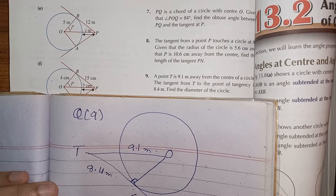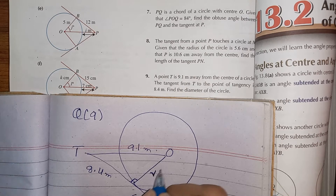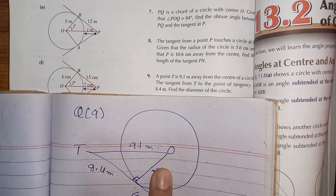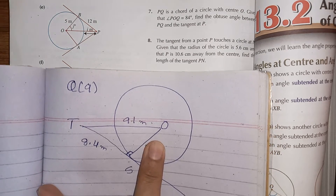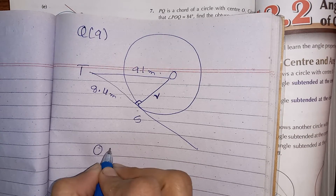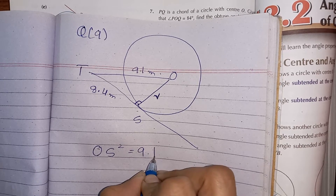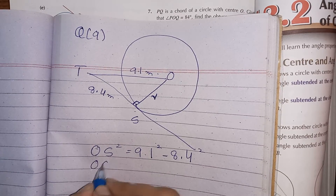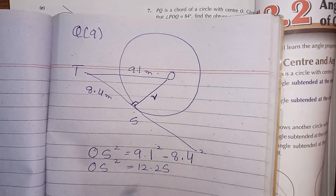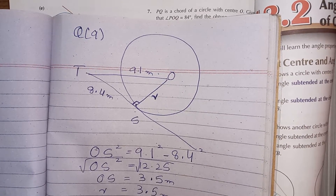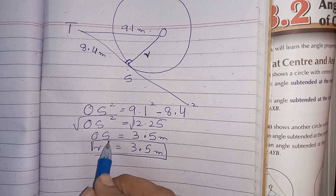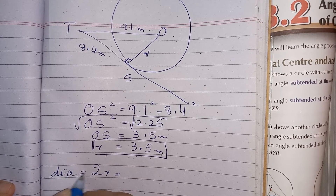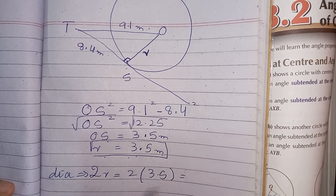The distance OT is 9.1 meters and TS is 8.4 meters. Let r be the radius OS. Applying the Pythagorean theorem: OS² = 9.1² − 8.4² = 12.25. Taking the square root, OS = 3.5 meters. The diameter is twice the radius: 2 × 3.5 = 7 meters.